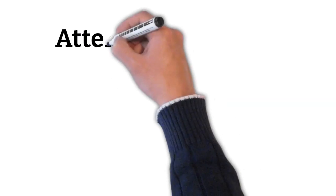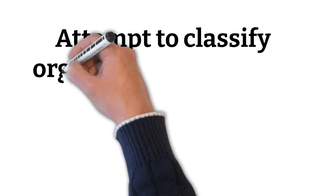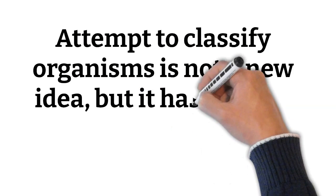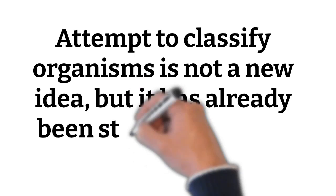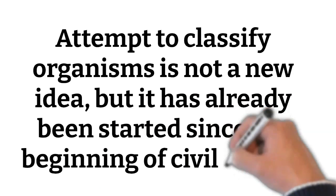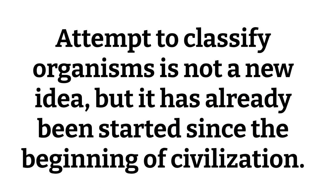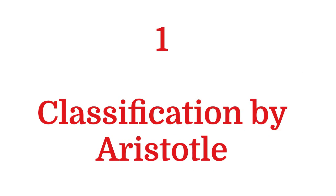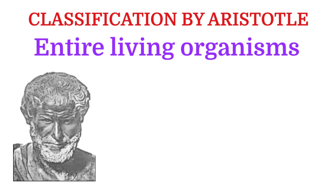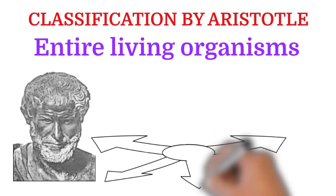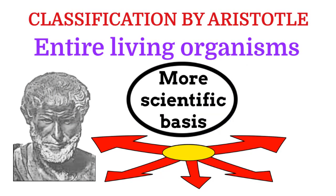As we have already learned in chapter 1, the attempt to classify organisms is not a new idea, but it has already been started since the beginning of civilization. First, come to classification by Aristotle. Aristotle was the first to classify the entire living organisms on a more scientific basis.